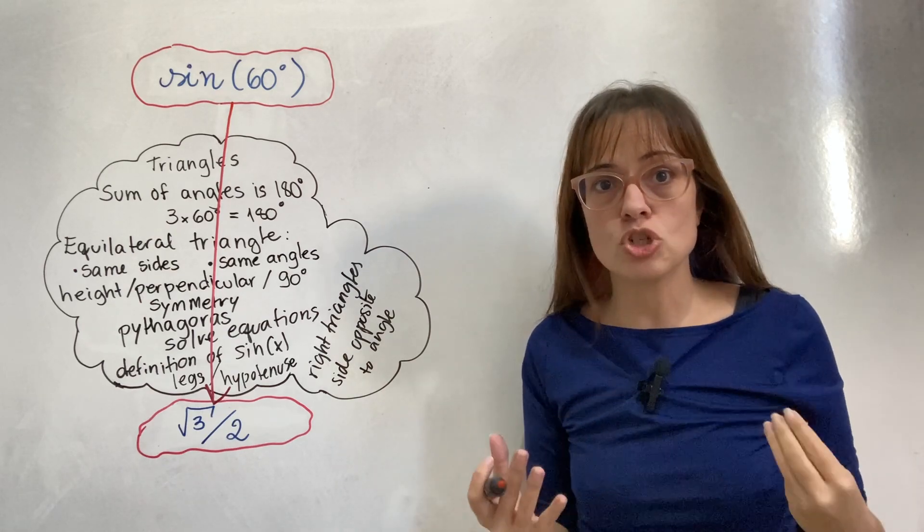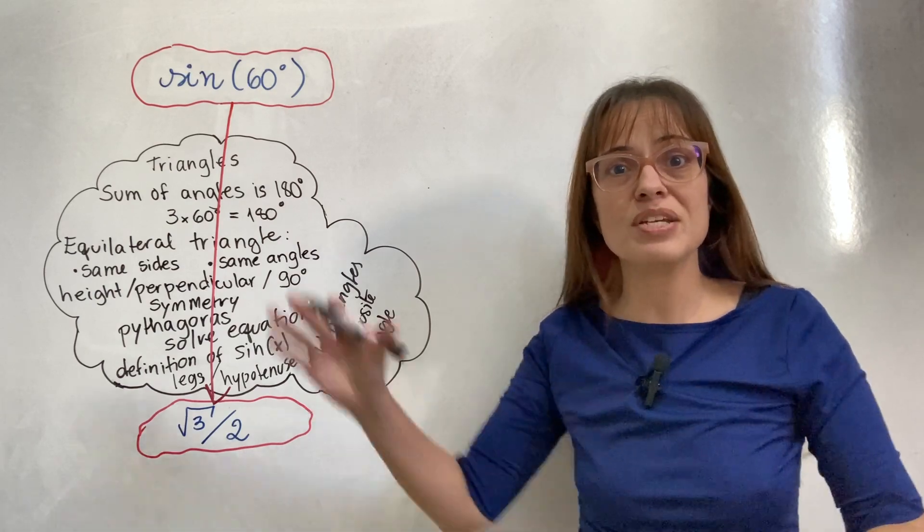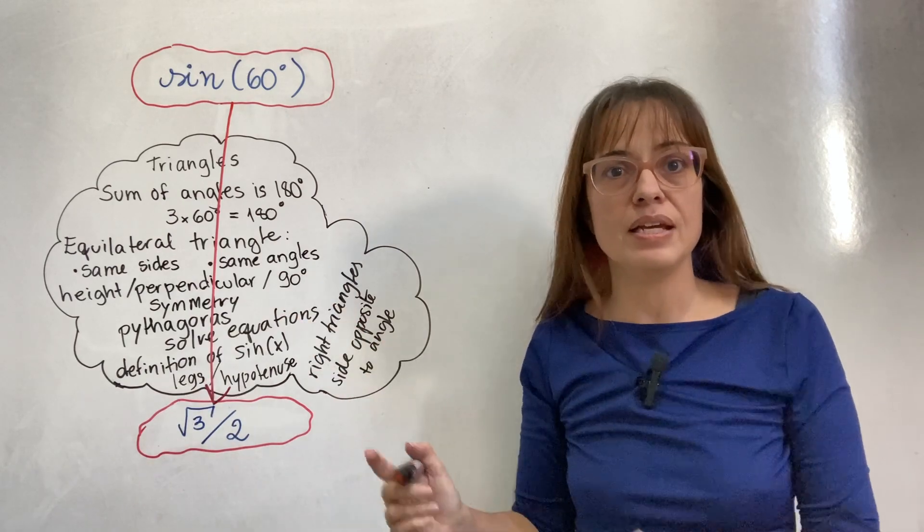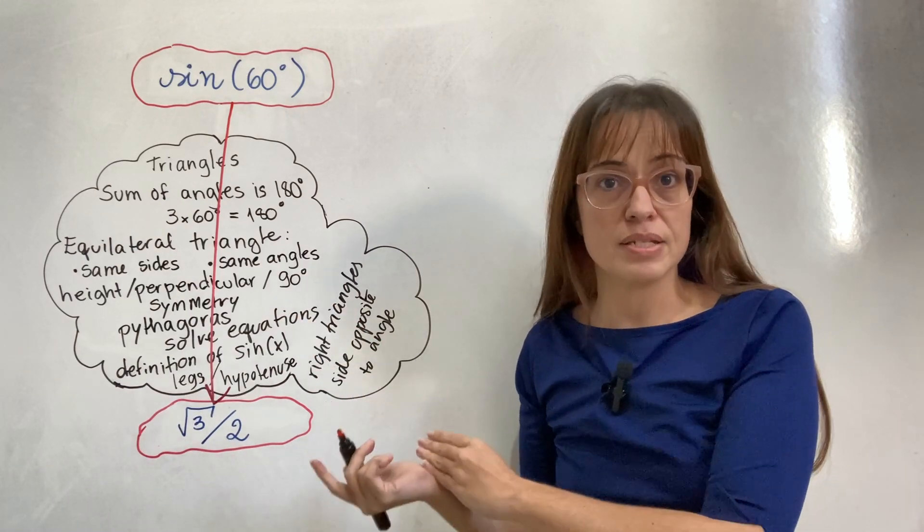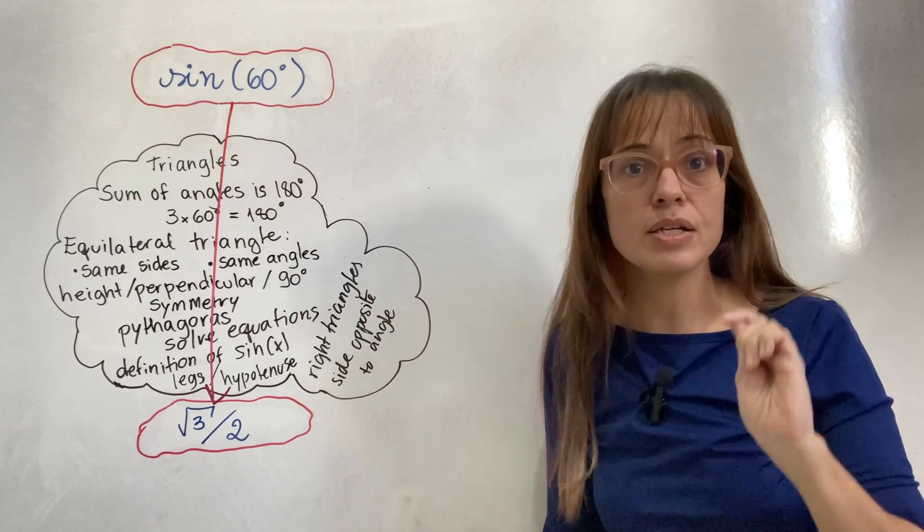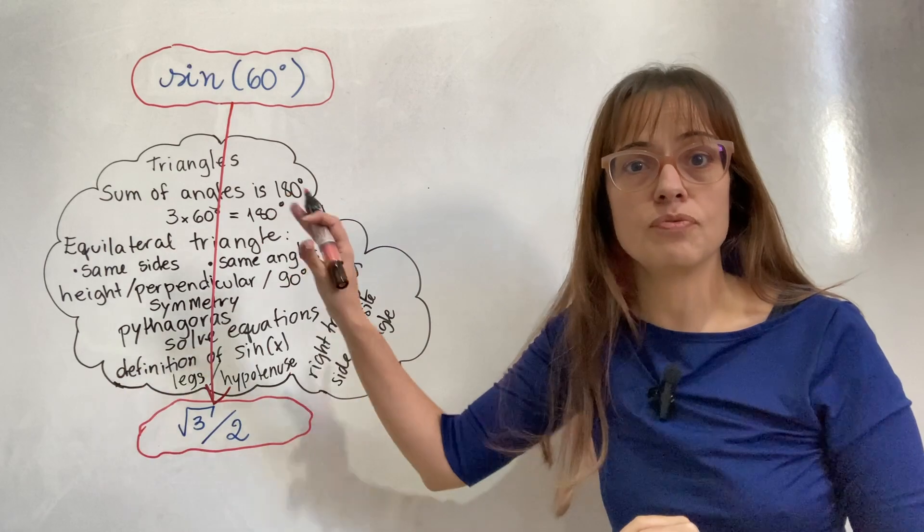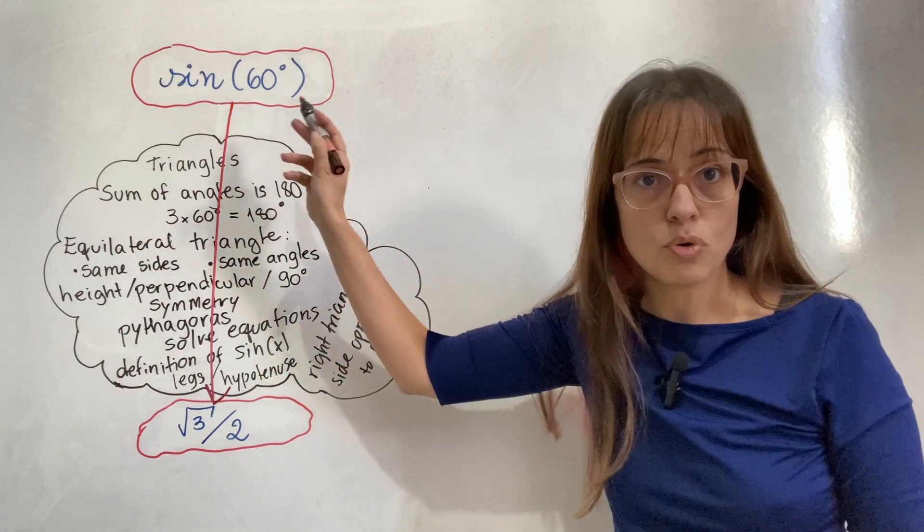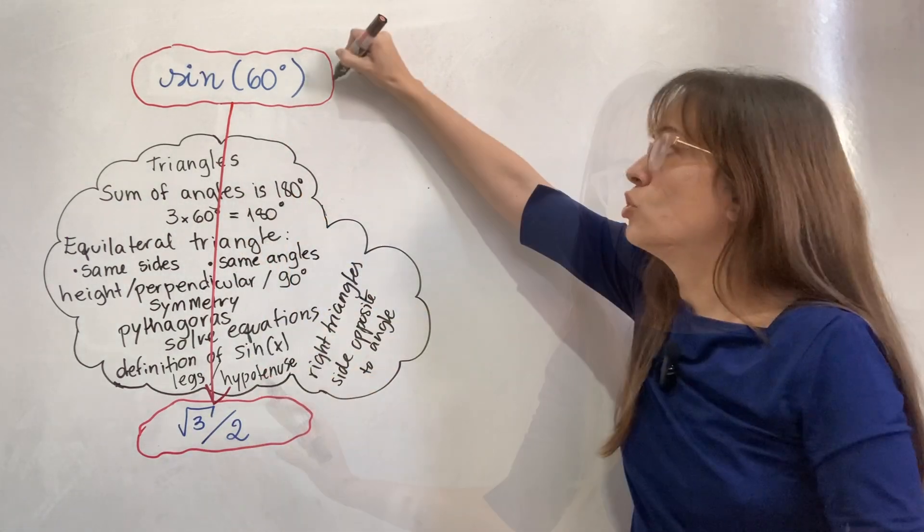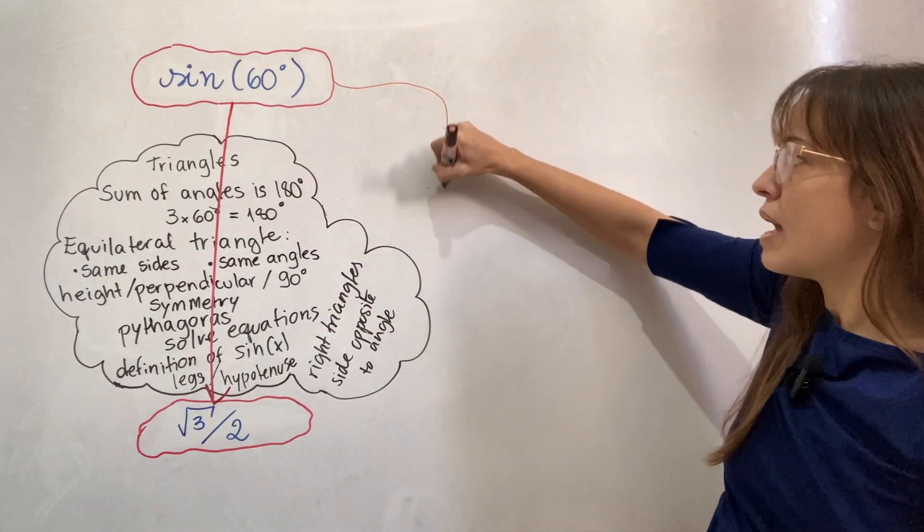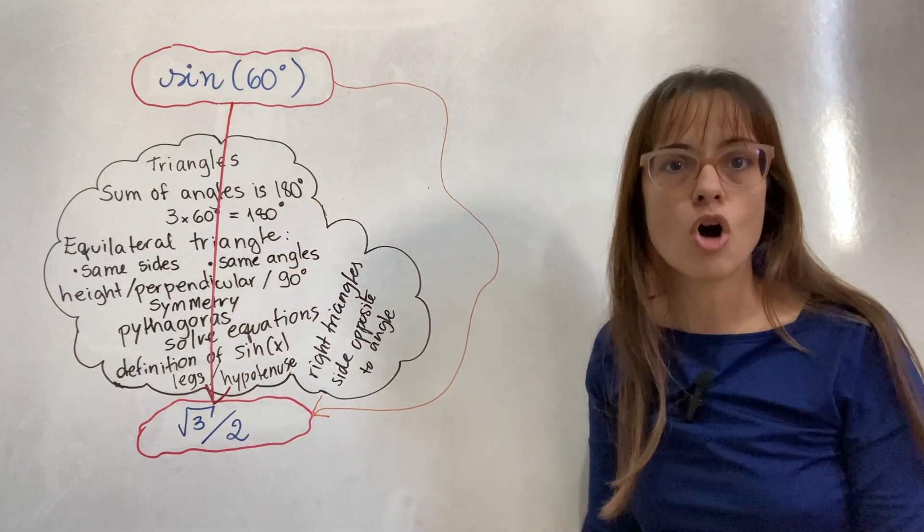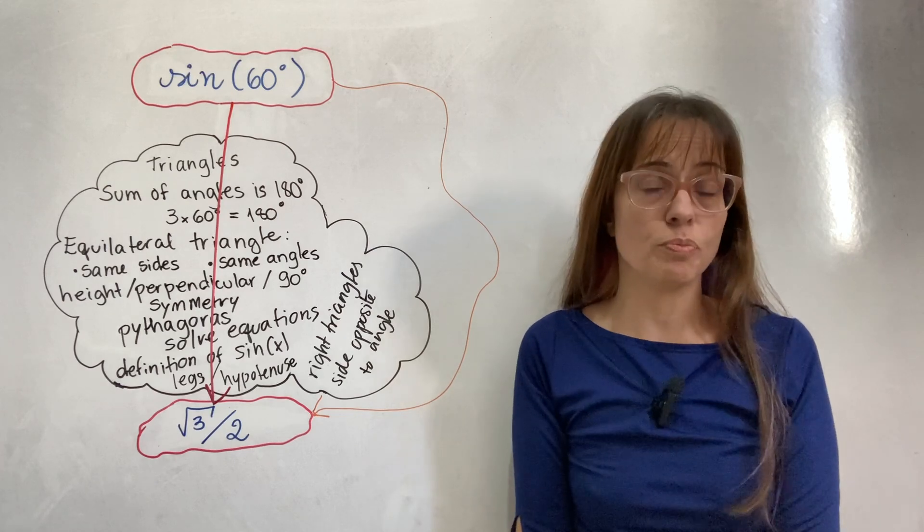But when you really stop to look at it, it's not that simple. There is all of this knowledge embedded in why this number is this number. And here is the really annoying part. When you sing a song instead of doing this, you still want to get from your question to your answer. But you're not going to take this path. You're going to take this other path that bypasses all knowledge. And that is the real problem here.